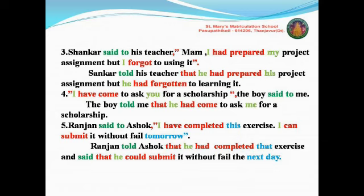Write 'told me' as it is — no changes take place in the speaker and listener. Then remove the open quotation and write the conjunction word 'that'. That will be written for the statement. Next, pronoun changes: 'I' changes into 'he', because 'he' refers to the boy. 'Have' — it is a present perfect tense — in indirect speech, present perfect changes to past perfect: 'had'. Had come. 'You' changed into 'me' — ask me for a scholarship. The boy told me that he had come to ask me for a scholarship.